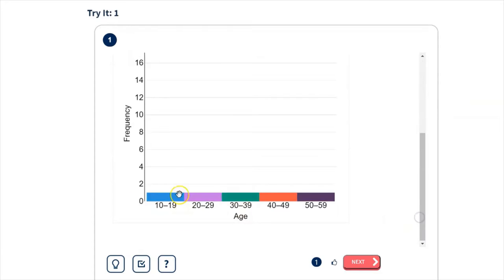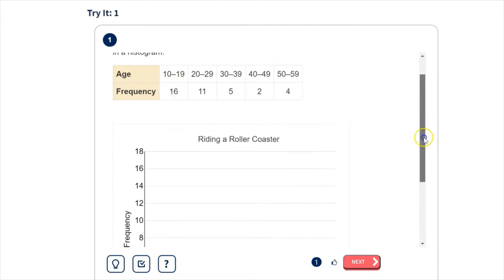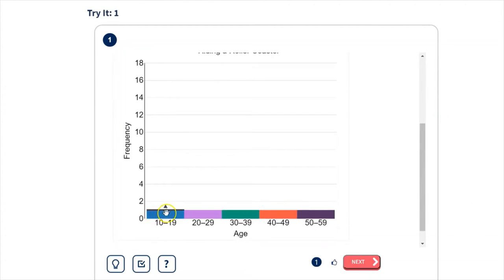So we can see it's broken into our different intervals here: Ages 10 to 19, 20 to 29, 30 to 39, and 40 to 49, and finally 50 to 59. So we can see for ages 10 to 19, the frequency was 16. So we want to make sure that goes up to 16. For ages 20 to 29, the frequency was 11. So we want to drag this to 11.